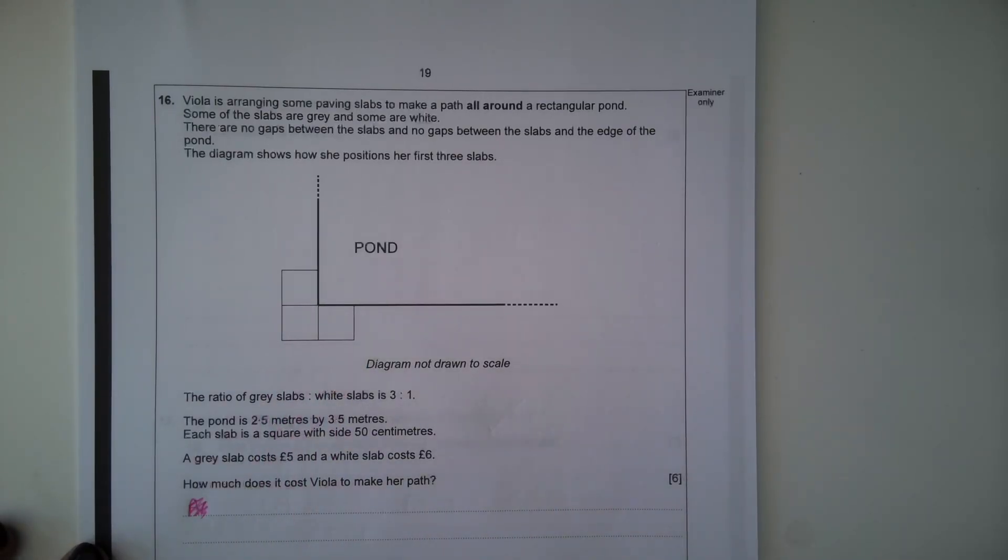The ratio of grey slabs to white slabs is 3 to 1. The pond is 2.5 metres by 3.5 metres. Each slab is a square with side 50 centimetres. A grey slab costs £5 and a white slab costs £6. How much does it cost Viola to make her path?